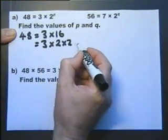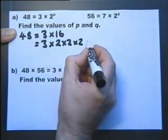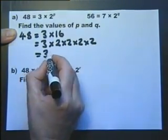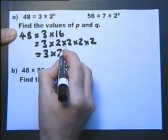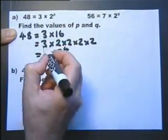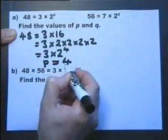let's look at that. 2 times 2 is 4, times another 2 is 8, times another 2 is 16. So this is in fact 16. So we can say 3 times 2 to the power of 4 is in fact 48. So I deduce that p is of value 4.